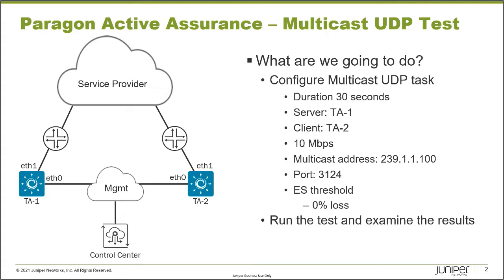This task sends UDP multicast traffic from a server — in our case TA1 — and then TA2, which acts as a client, receives the multicast traffic. This would make more sense with more than one client, but in our test bed we only have two test agents, so we'll use just one client. The concept holds true whether it's one multicast client or many.